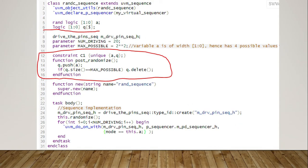To log-in values that are generated with each randomization, post randomization function is used. If all possible values of the variable are covered, we delete the queue for a fresh start.